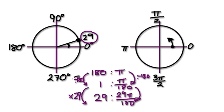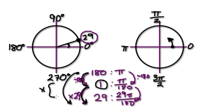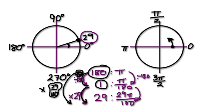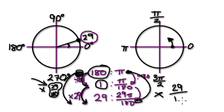Rather than dividing by 180 to get to 1 degree and then multiplying by 29, you can do it in one go. So what do you need to multiply by to get from 180 to 29? Well, it's destination divided by original. So the multiplier would be 29 over 180. If you multiply 180 by this multiplier, you get to 29.